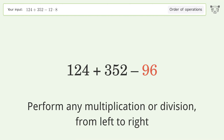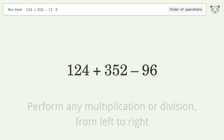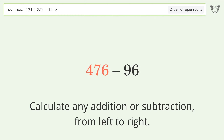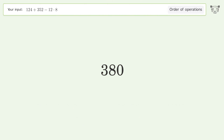First, perform any multiplication or division from left to right: 12 times 8 equals 96. Then, calculate any addition or subtraction from left to right: 124 plus 352 equals 476.